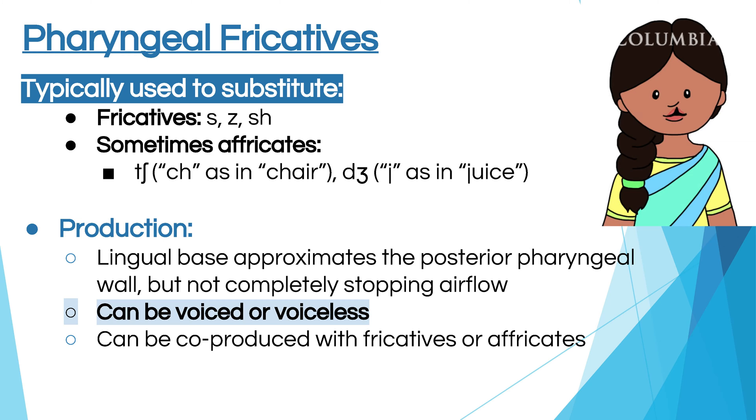You've heard pharyngeal fricatives in many languages. For example, certain dialects of Caribbean Spanish use a pharyngeal fricative for 'perro' — saying 'pejo' — or for 'carro' — saying 'cajo.' Another example is how people pronounce Mexico or Oaxaca. It's also very common in French, German, and Hebrew. Many languages have pharyngeal fricatives; General American English does not. It can be voiced or voiceless, and you can produce it co-produced with an affricate — that co-production is tricky because you have to pull them both out.